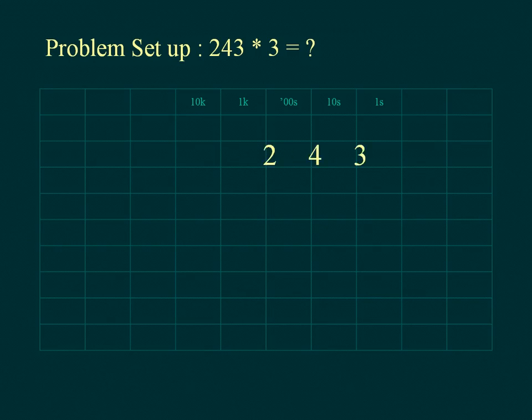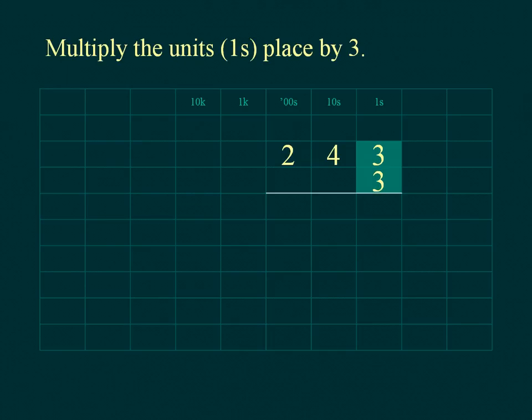Place the digits of the multiplicand above the multiplier so that the units line up. Multiply the units of the multiplicand. Place the results below the line in the units place.